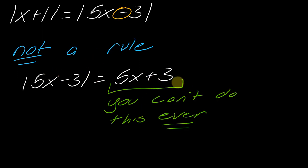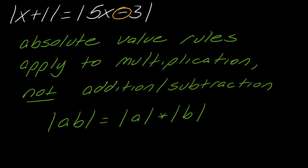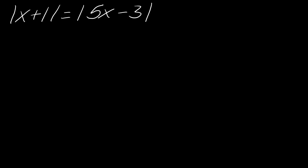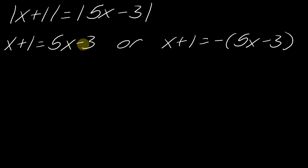Absolute value rules apply to multiplication, not addition and subtraction. So if I had the absolute value of a times b, I can break it into the absolute value of a times the absolute value of b — but you cannot do this for the absolute value of a plus b or a minus b. Try to stop your brain if it starts adding rules that aren't there. We're still using the same logic: drop the absolute value and make one side negative.